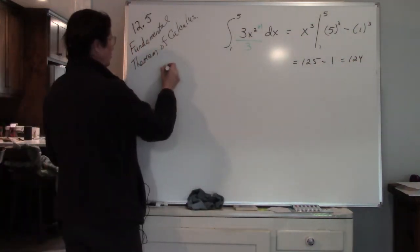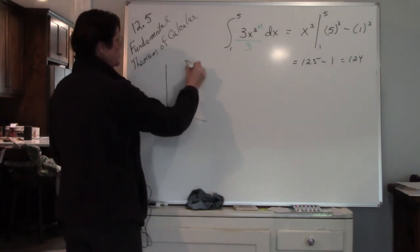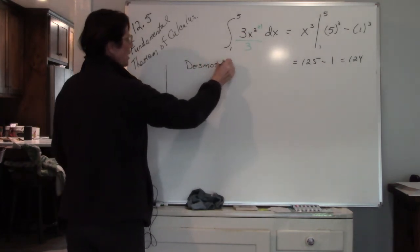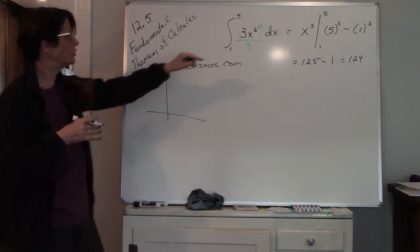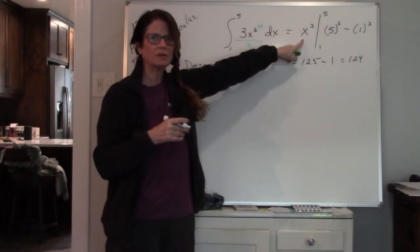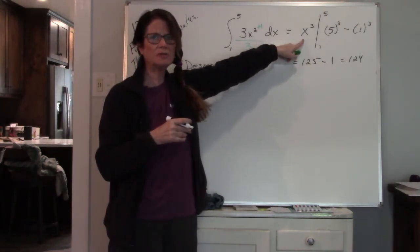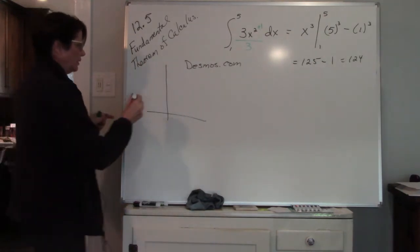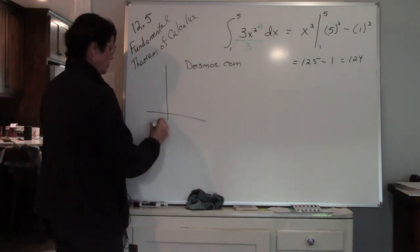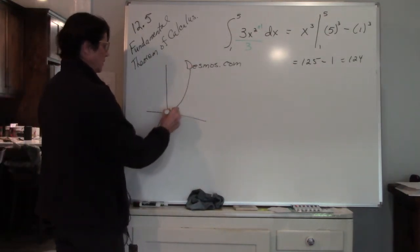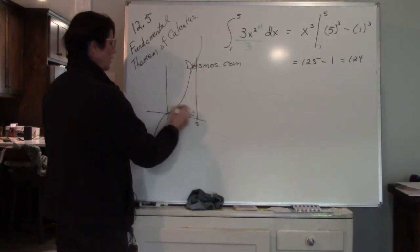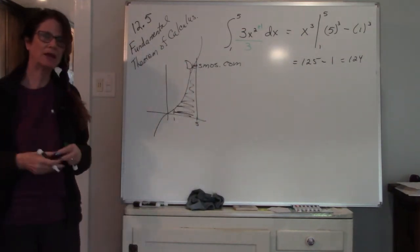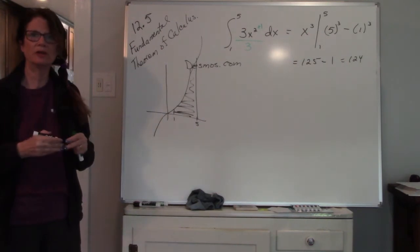If you need a visual, you can always go to Desmos.com and actually look and plug in your antiderivative. Plug in this value in Desmos.com and you can actually see the curve of the function. The function is going to look something like this, and I am looking for the area — it goes all the way up here. So I'm looking for the area between 1 and 5, which is about 124 units squared.